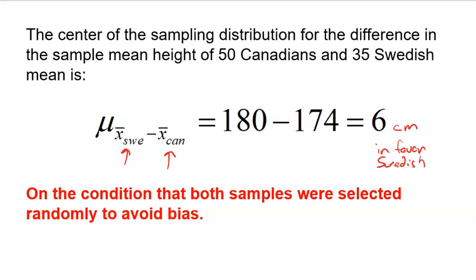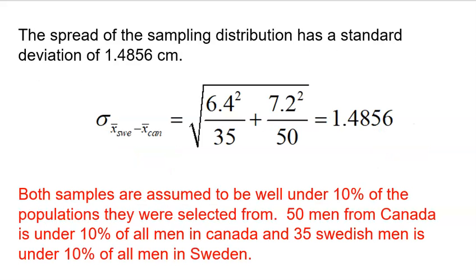Next up comes the standard deviation. I expect to get a difference of 6, but it could be more or less. Here is the standard deviation for the difference. Taking the standard deviation for the Swedish men, 6.4, squaring it, dividing it by the 35 Swedish men in my sample. 7.2 squared, that was the standard deviation for Canadian men, dividing that by 50.